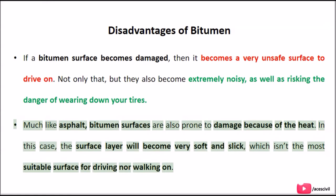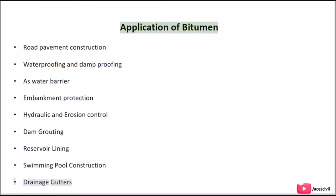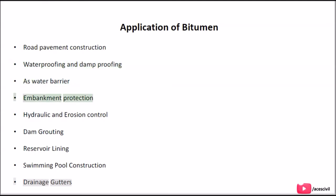In this case, the surface layer will become very soft and slick, which is not suitable for driving or walking on. Applications of bitumen include: road pavement construction, waterproofing and damp proofing, use as a water barrier, embankment protection, hydraulic and erosion control, dam grouting, reservoir lining, and swimming pool construction.